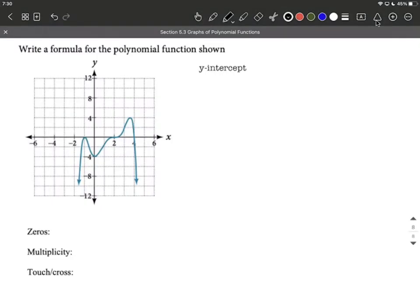Okay, we're given the graph of a polynomial function. Let's use this graph and come up with a polynomial function itself that would give us this graph.